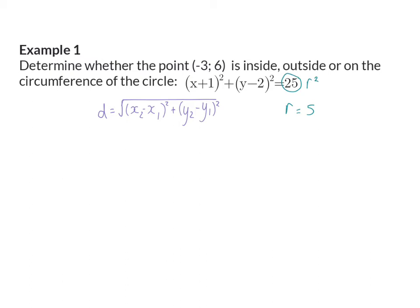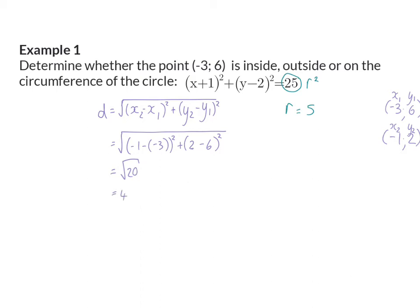We need our two coordinates. Our first coordinate is given as (-3, 6), and this I'm going to make x₁ and y₁. The center of our circle we can see from the equation, and that will be (-1, 2), which I will call x₂ and y₂. Now we can substitute into our equation. When you simplify this you will see that you have the square root of 20, which rounded off will be 4.47. Comparing our two lengths: 4.47 is smaller than 5, which means the distance between the center and the point is smaller than the radius, and that means that the point (-3, 6) is inside the circle.